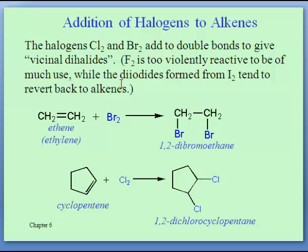Chlorine and bromine are the most common halogens and they both work very well, giving the corresponding dibromo or dichloro product. There is one more aspect of adding Cl2 or Br2 across a double bond: when we do that on a ring, there's a special outcome, and we'll talk about that on the next slide.